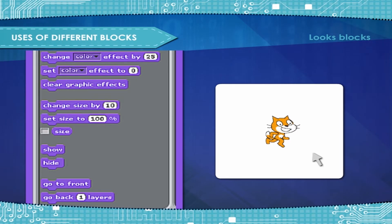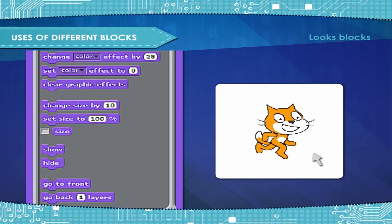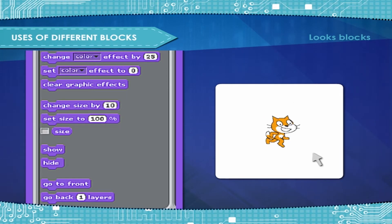Change size by — changes the sprite's size by the amount. Set size to — sets the sprite's size to the amount.